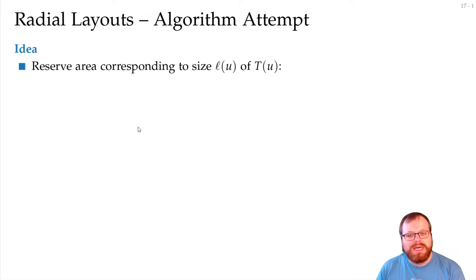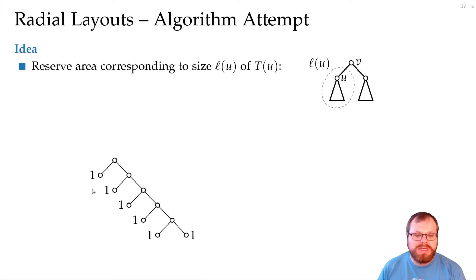Let's have a look at a very simple attempt of an algorithm. The idea is that for every subtree, we want to reserve some area of the circle. And the area we want to reserve corresponds to the size of the subtree. So if you are at this position here, then we look at the size of u, and it gets some area proportional to the size. Again, as in the previous section, we can simply compute the size of all the subtrees by going with a post-order traversal through the tree.